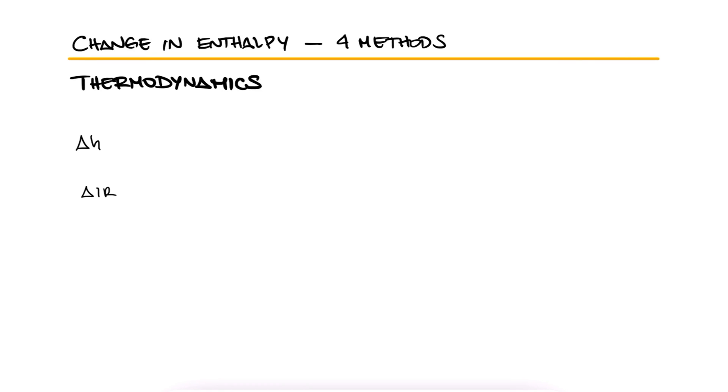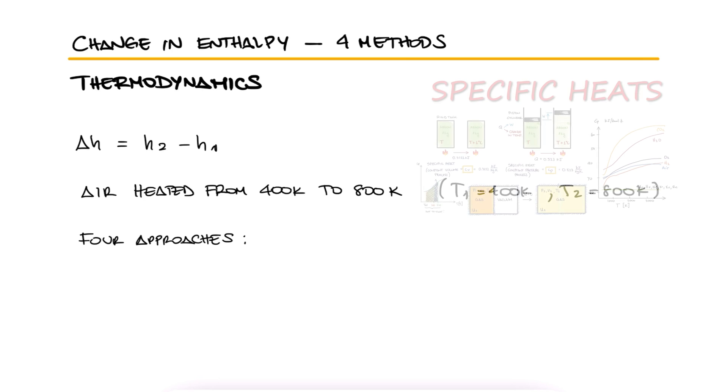What is the change in specific enthalpy of air as it is heated from 400K to 800K using all four approaches we covered in the main lecture video? This is the first example for the specific heats main video.